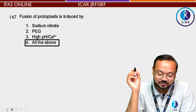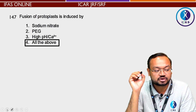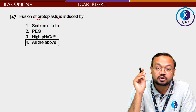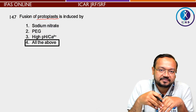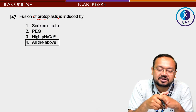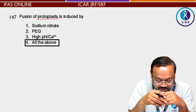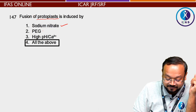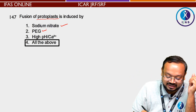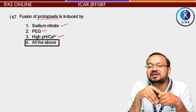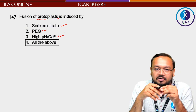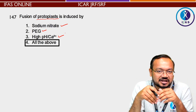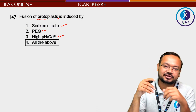Next question: The fusion of protoplasts is induced by which chemical? Protoplast fusion के लिए कौन से fusogen का इस्तमाल किया जाता है? Sodium nitrate का इस्तमाल किया जा सकता है, polyethylene glycol (PEG) का इस्तमाल किया जा सकता है, high pH या high calcium solutions का इस्तमाल किया जा सकता है, polyvinyl alcohol का इस्तमाल किया जा सकता है। सारे दिए गए chemicals का इस्तमाल किया जाता है — यह काफी आसान question है।